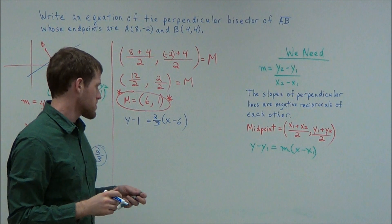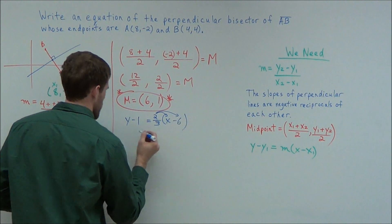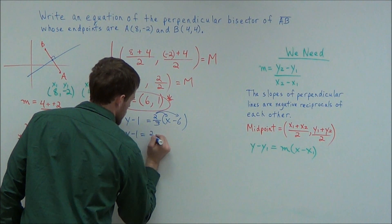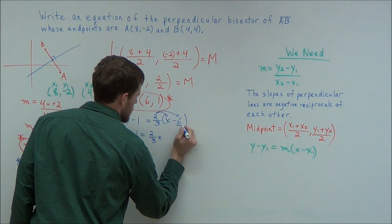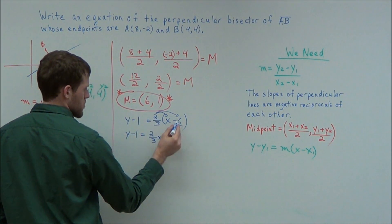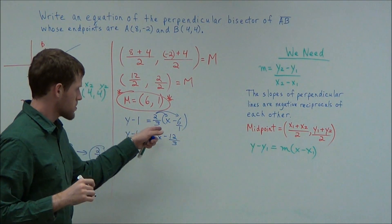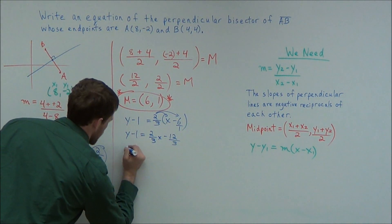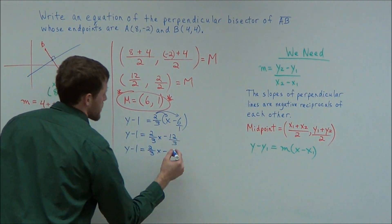But remember, we need this to say y equals Mx plus B, so what we want to do is we're going to distribute this 2 thirds. So we have y minus 1 equals, and now 2 thirds times x is 2 thirds x, and 2 thirds times negative 6, we could call this negative 6 over 1. So now 2 times negative 6 is negative 12. We multiply the numerators, and now 3 times 1 is 3. So when we multiply 2 thirds times negative 6 over 1, we get negative 12 over 3. So for the next line, we can simplify a bit. We have y minus 1 equals 2 thirds x minus, and now 12 divided by 3 is 4.